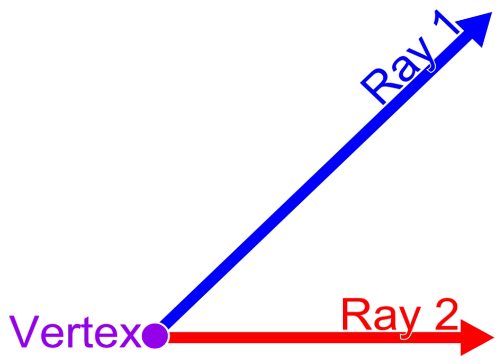According to Proclus, an angle must be either a quality, a quantity, or a relationship. The first concept was used by Eudemus, who regarded an angle as a deviation from a straight line; the second by Carpus of Antioch, who regarded it as the interval or space between the intersecting lines. Euclid adopted the third concept, although his definitions of right, acute, and obtuse angles are certainly quantitative.